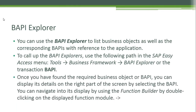Once you have found the required business object or BAPI, you can display its details on the right part of the screen. By selecting the BAPI, you can navigate into its display using the Function Builder by double-clicking on the display function module. Let's get into the system and take a look at the BAPI Explorer.